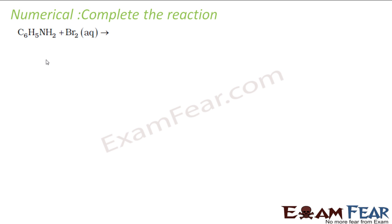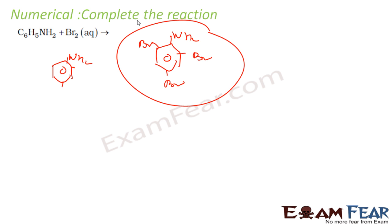I have aniline reacting with bromine. It's a very strong electrophile, so this bromine will be placed at ortho and para positions. What you will get is NH2 with bromine here, bromine here, and bromine here. This is 2,4,6-tribromoaniline. If you want bromine at only one position, you have to poison this NH2 with pyridine, and we've seen that kind of reaction.